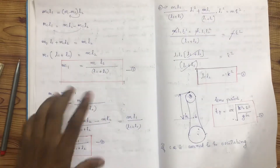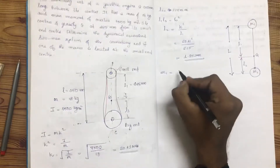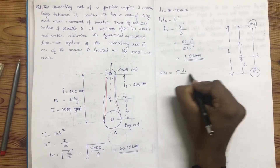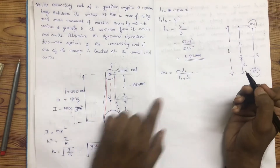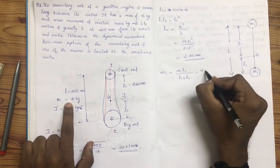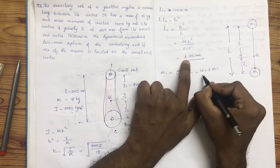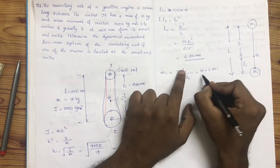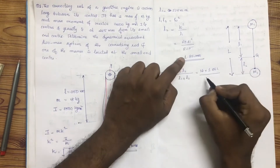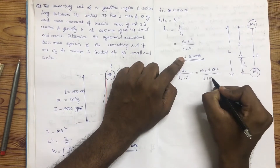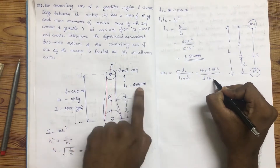We can find M1 and M2 using these two equations. M1 is equal to 18 kg multiplied by L2 divided by L1 plus L2. L2 is equal to 1.852 mm. L1 plus L2 is total L. L1 is equal to 0.22.